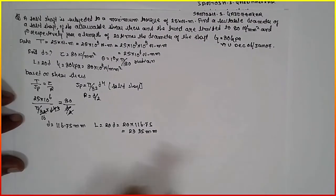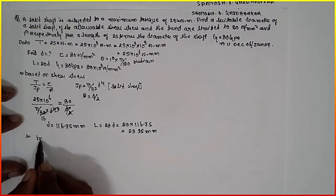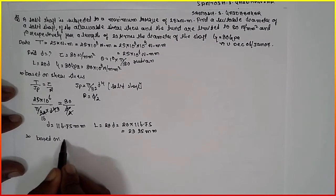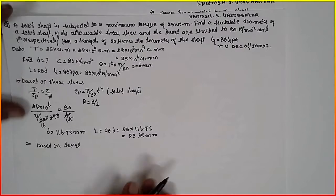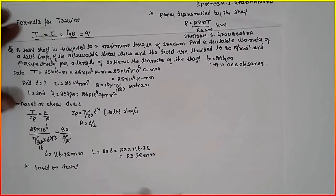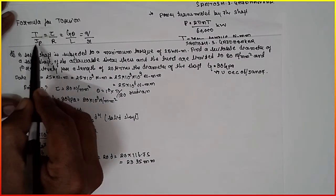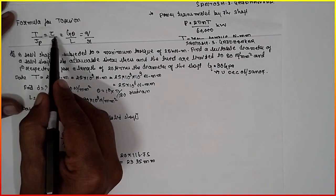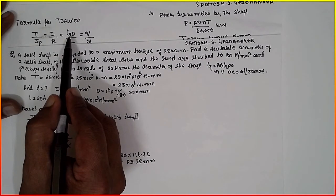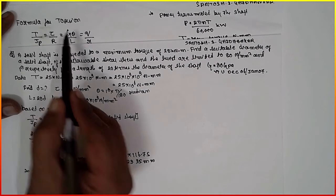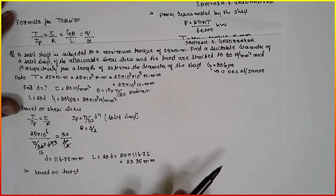Now based upon the twist. In the case of diameter or dimensions, every time you have to go with the torque. Don't go with tau by R or G theta by L. Don't go with these two combinations. In case of D, every time you have to compare with that of the torque.